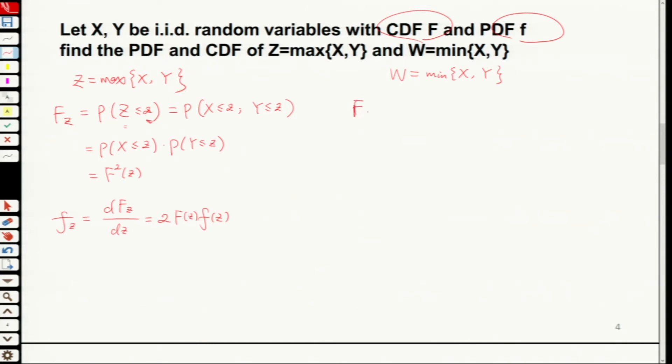So now let's suppose we have Fw which equals to probability W less than or equal to lowercase w. So this one is max. Now we are dealing with minimal. In terms of minimal, we need to convert it to the greater than. So that's why we are trying to put this using the complement. 1 minus probability W greater than this w.